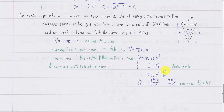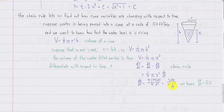So dV/dx is just one-fourth pi x squared, and then we add dx/dt on the end. What we wanted originally was how fast the water level is rising, which is dx/dt, so all we have to do now is solve for dx/dt. From the problem we know dV/dt, the rate of change of the volume of the water, because it's told us it's changing at 50 feet cubed per minute. We can plug in 50 for dV/dt.